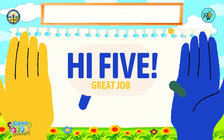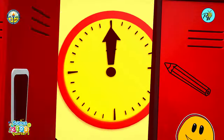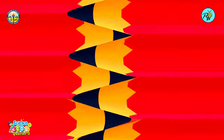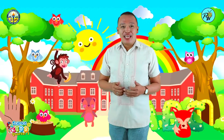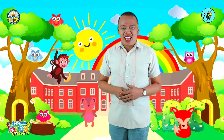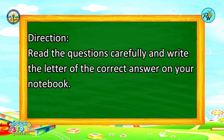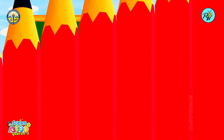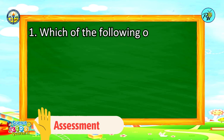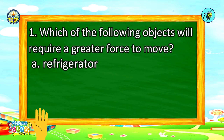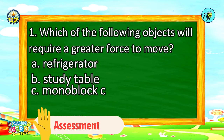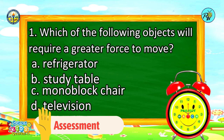Great job, kids! At this moment, let us now assess what you have learned from today's discussion. Are you ready? Let's do this! Read the questions carefully and write the letter of the correct answer in your notebook. You are given 5 seconds to answer each item. Number 1: Which of the following objects will require a greater force to move? A. Refrigerator, B. Study table, C. Monoblock chair, D. Television.